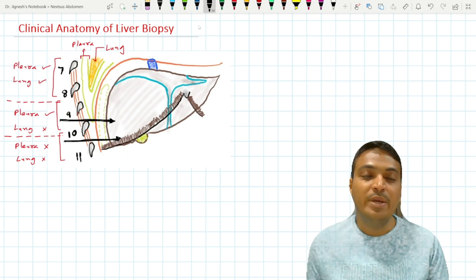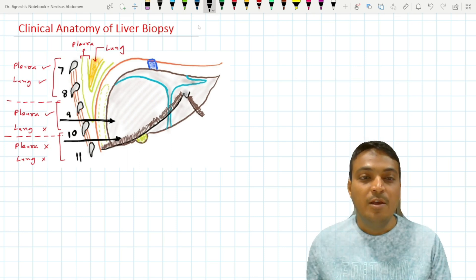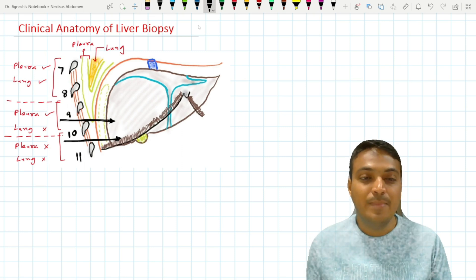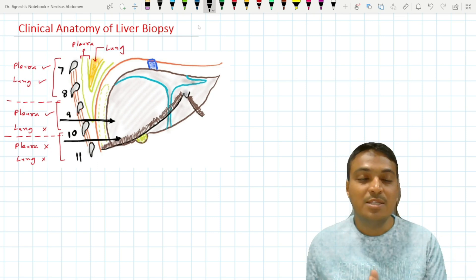And that is the clinical anatomy concerned with the liver biopsy. When we put the needle in the 9th or the 10th intercostal space, it will pierce so many structures. We can enumerate it from the outer to inner side.